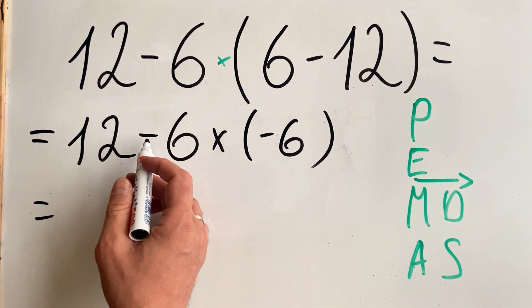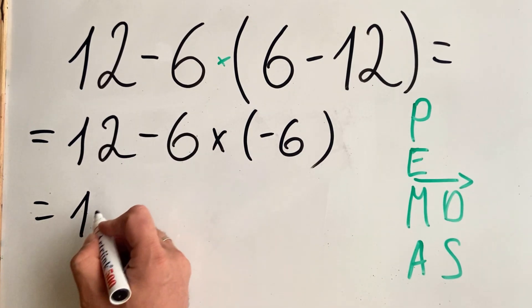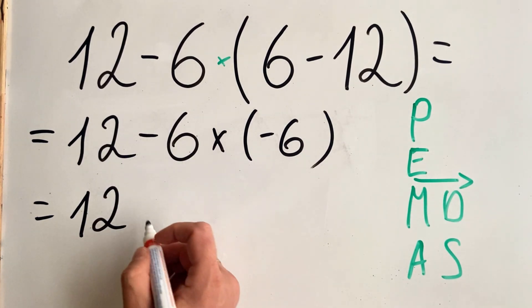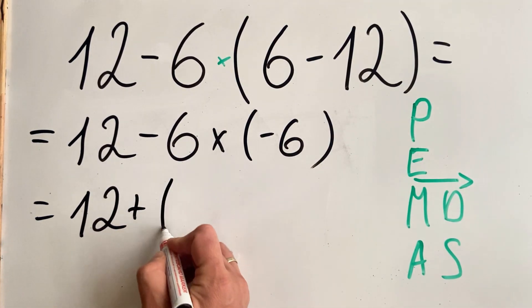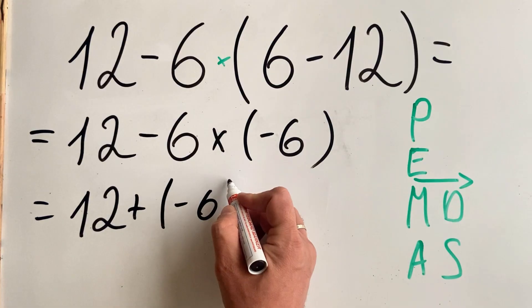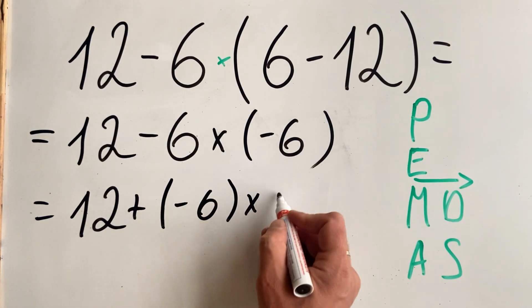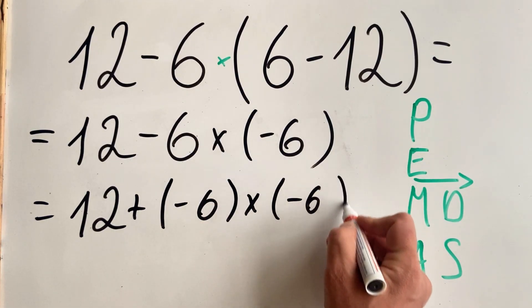This one we will write as an addition for us to be able to more easily multiply and not get confused by the signs. So we get 12 plus minus 6 multiplied by minus 6.